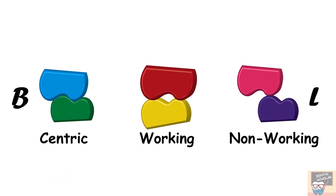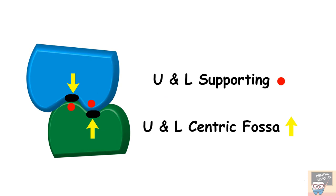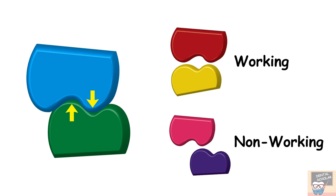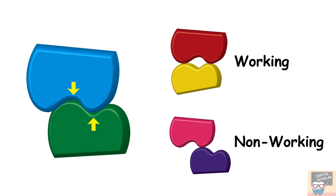Now let's look at occlusal equilibration in centric occlusion. The black shaded area represents the possible prematurity, and the contact in this position is between the supporting cusps and the central fossa. If you reduce the supporting cusp, it would relieve the interference in centric but would lead to opening of contacts in working and non-working positions — so reduction of the supporting cusp in centric is not recommended. The only option is to reduce the central fossa. Reducing the central fossa relieves the centric interference, and since the central fossa does not participate in working or non-working contacts, those positions are unaffected. So in centric interference, reduce the central fossa.